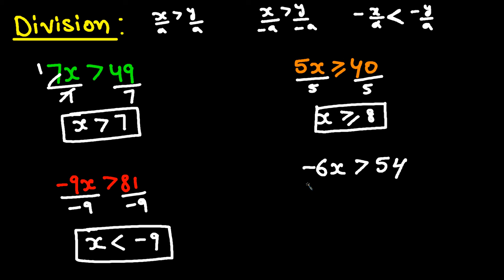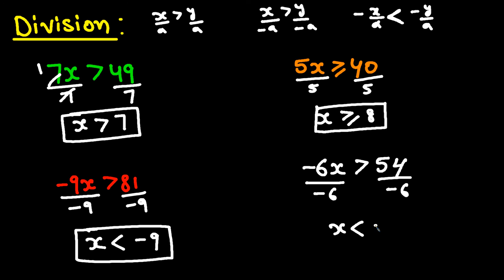In this one we're dividing by negative 6, so again we're dividing by a negative number. We flip the inequality symbol — it was greater than before and now it changes to less than, giving negative 9.